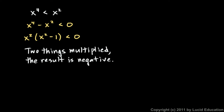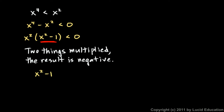One and only one of them can be negative. x squared is never negative — anything squared is never negative. So if one of these two factors must be negative and it can't be x squared, then x squared minus one has to be negative. Logically, our problem simply reduces to x squared minus one being negative.